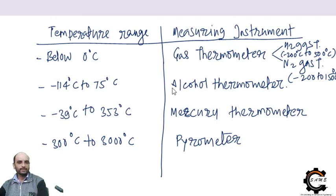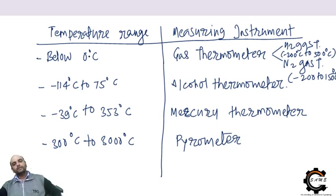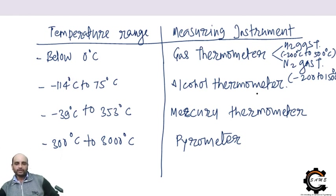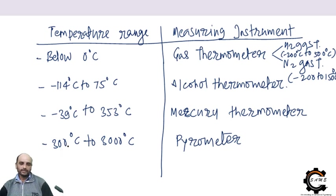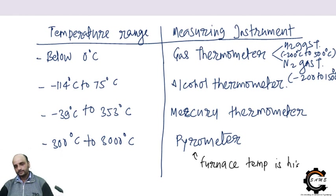Now, the temperature range and thermometers: below certain temperatures you use a gas thermometer. For the range of −114°C to 200°C you can use an alcohol thermometer. For −37°C to 353°C you use a mercury thermometer. For furnace areas, from 300°C to 3000°C, you use a pyrometer.